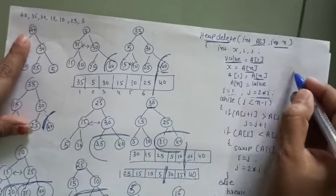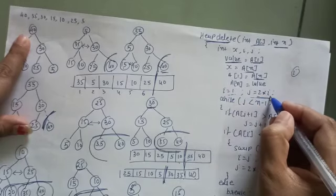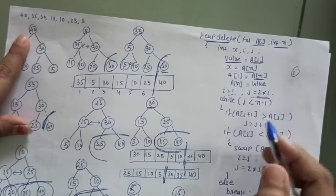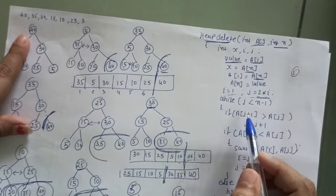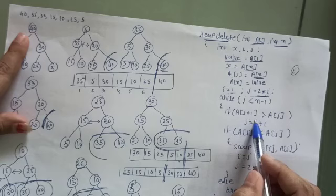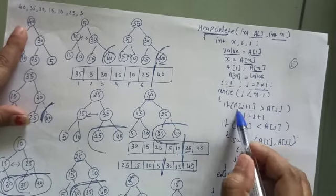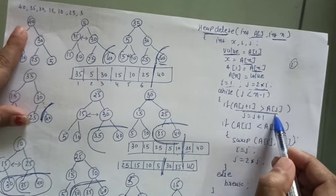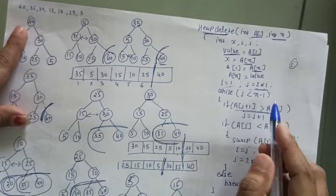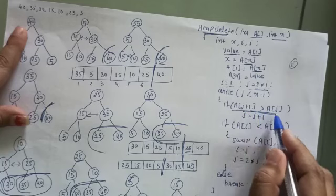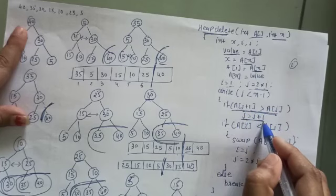So J is nothing but a left child. I is the node, then J is equal to 2 multiply I, that means the left child. Now if A of J plus 1 is greater than A of J, that is nothing but comparison of left child and the right child. And if this condition is true, that means right child is greater, at that time increment the J.